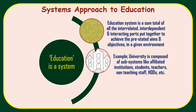Ek example se samajhte hai. University is composed of subsystems like affiliated institutions, students, teachers, non-teaching staff, HODs, principal, administrative bodies, administration, departments, there is library — aur bahut sare subsystems milke ek complete supra system jo university hai usko banaate hai.